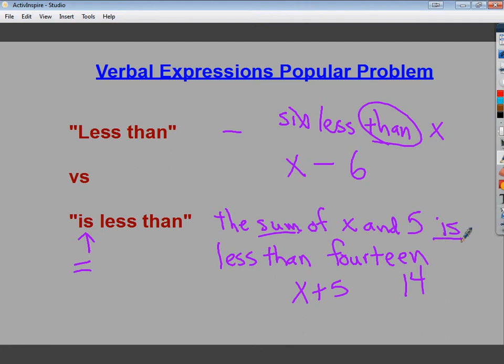But if you see the is less than, they want you to put the inequality that shows the x plus 5 being less than 14 in terms of its value is less. So that's the big difference in verbal expressions between less than and is less than. So if you see the is less than, or even is greater than works the same way, you need to pop in the old inequality, and if you just see less than or greater than, that's the whole add subtract thing.